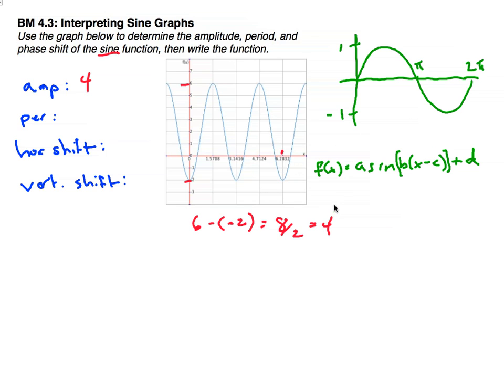So, if we have 2 cycles of our graph in 2 pi, and we want 1 period, just kind of cut 2 pi in half, cut that in half, and we get pi, so that is our period. And notice that was our period, and that's 2, is our b.